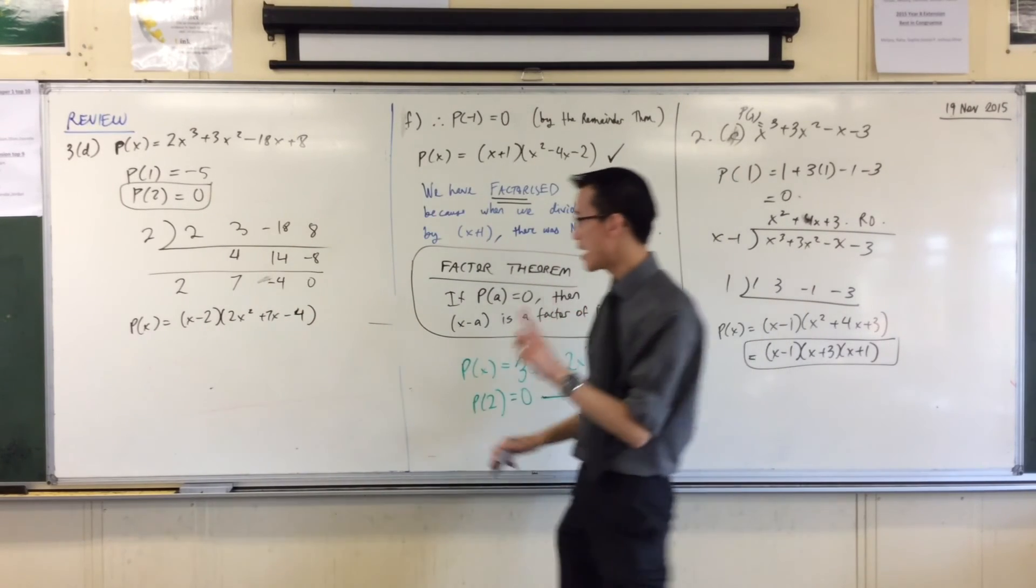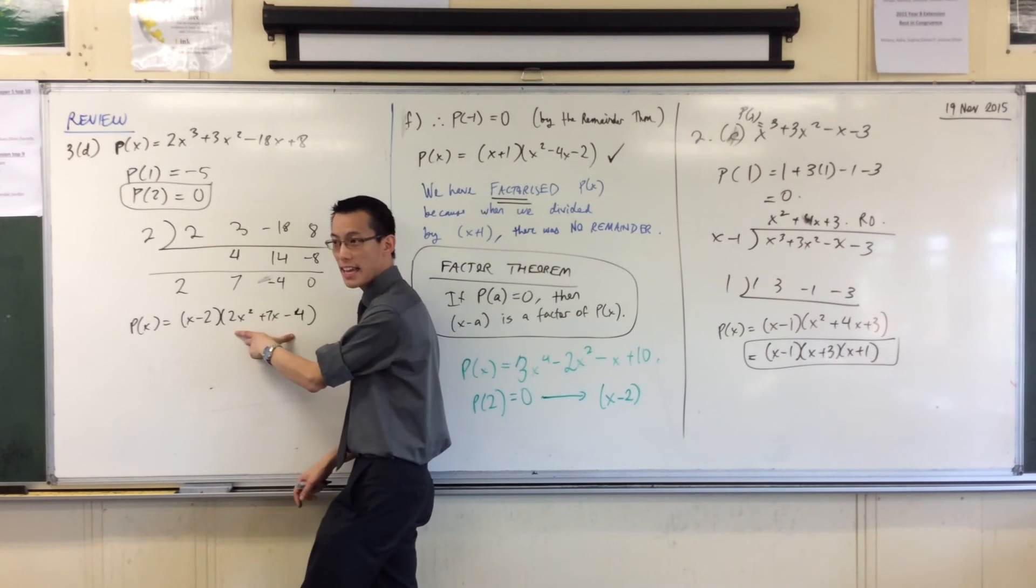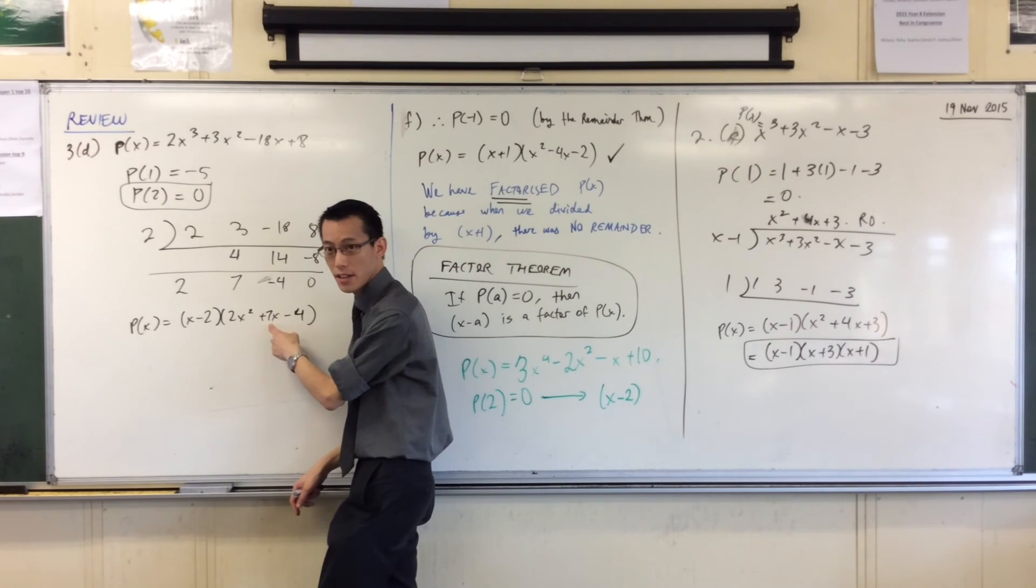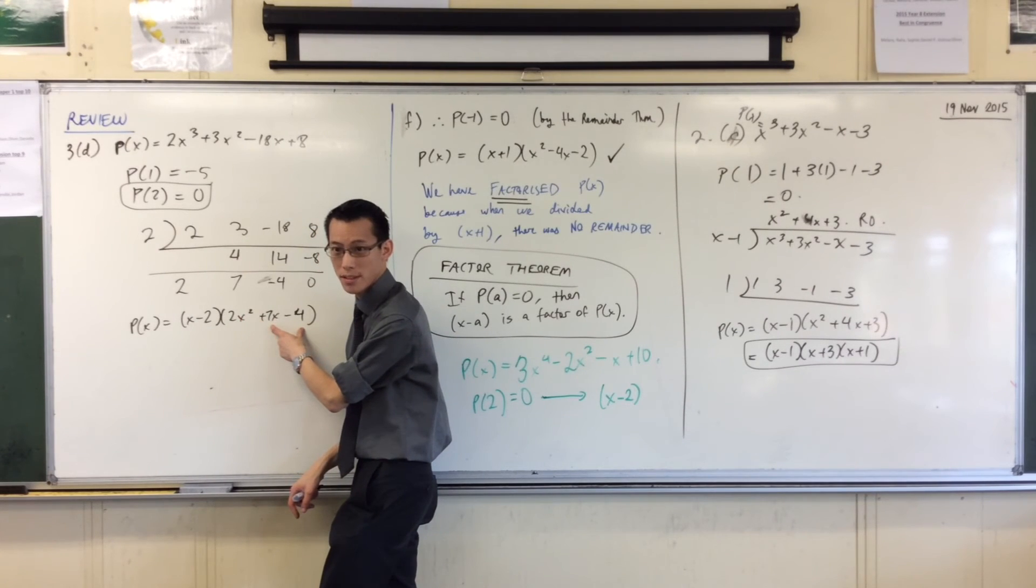Now that's a bit hard but it's doable. Right? I want a pair of numbers that multiplies to negative 8 and adds to 7. Let me say it again. Multiplies to negative 8, adds to 7. Can anyone tell me what the pair of numbers is?